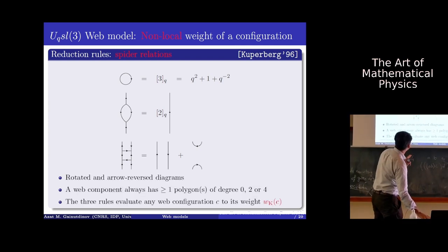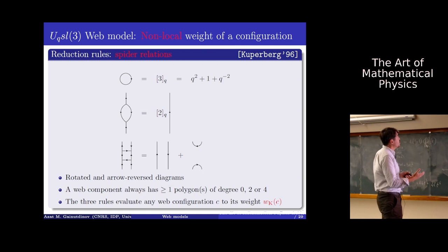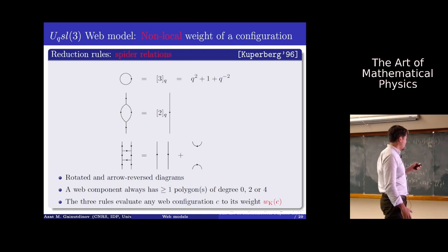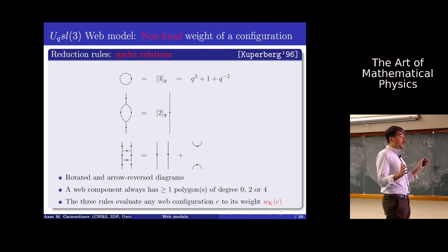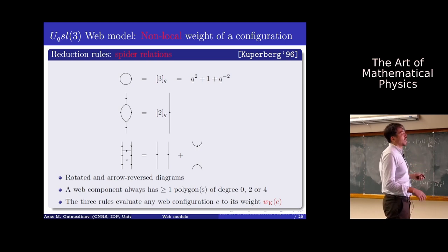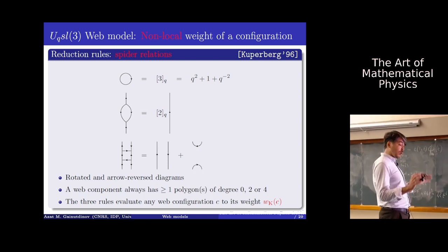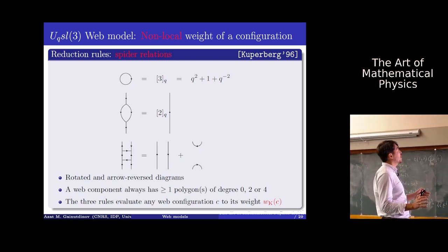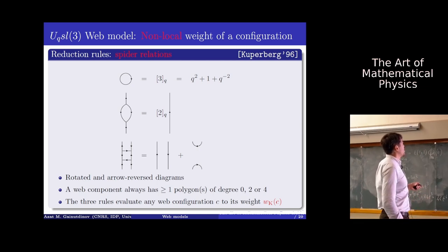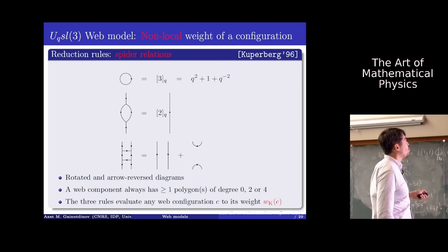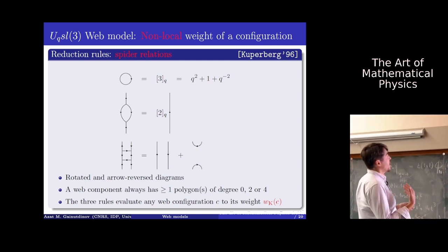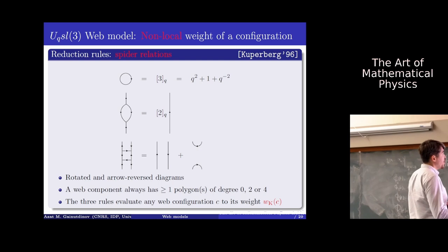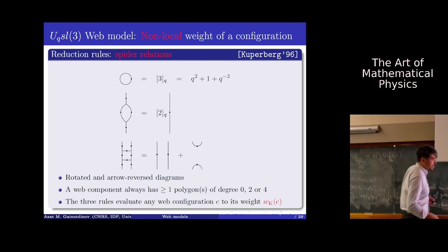There are only these three rules, plus rotated and arrow-reversed versions. Kuperberg showed that they are well defined — any web can be evaluated in a unique way. There may be several orders in which to apply the rules, but the result is always the same. This is a non-trivial fact, and any closed web can always be evaluated because a web component always contains at least one polygon of degree 0, 2, or 4. These rules evaluate any web configuration to its Kuperberg weight W_K(C).